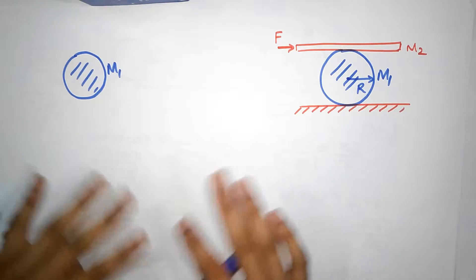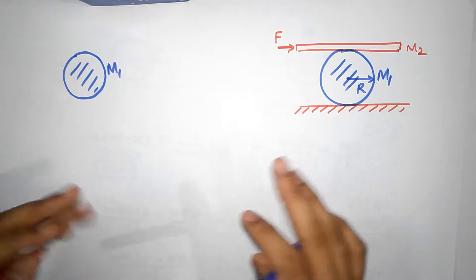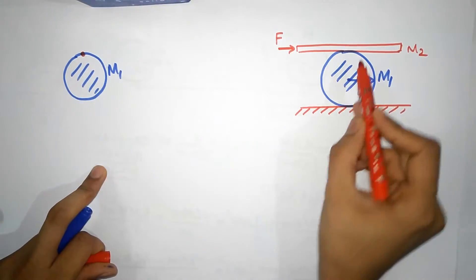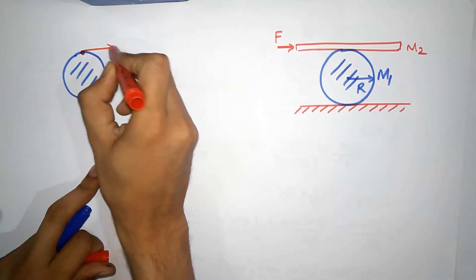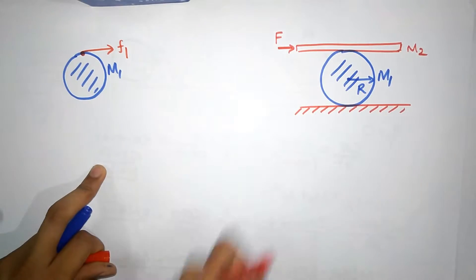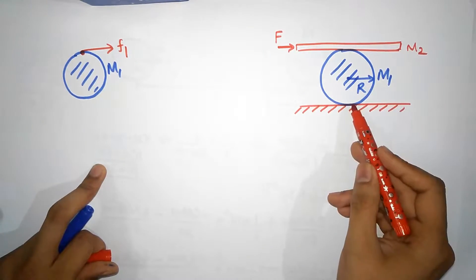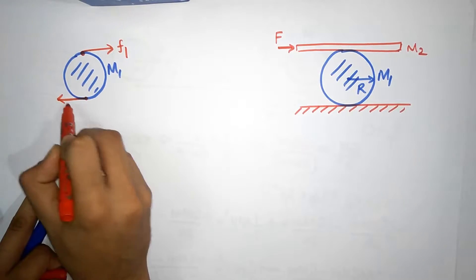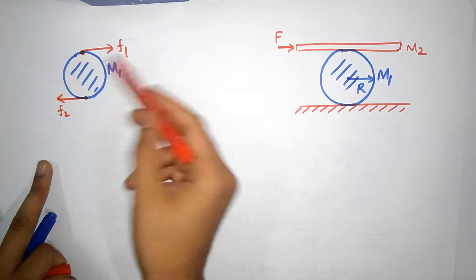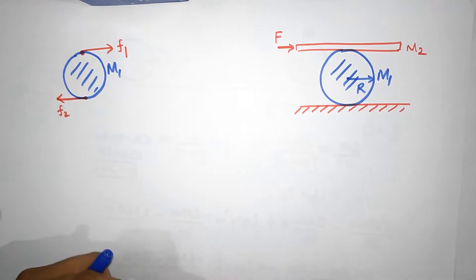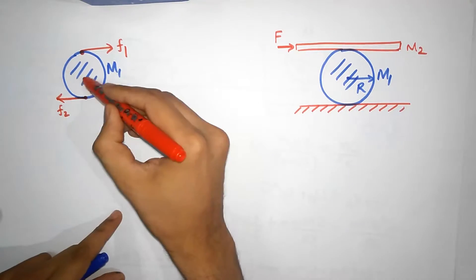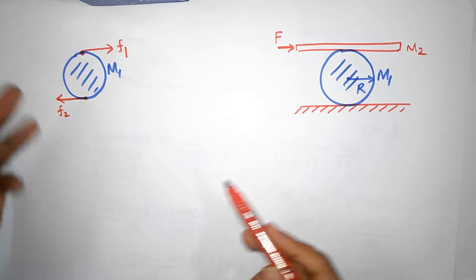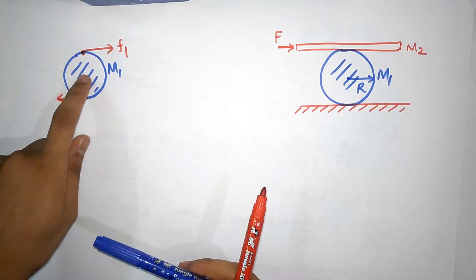You can choose any direction for friction — that's the beauty of Newton's laws. If you make a mistake, you'll just get a negative sign. I'll take friction f1 on the top surface going forward, and friction f2 on the bottom surface going backward. Gravity acts downward and normal force upward, but these produce no torque about the center of mass.